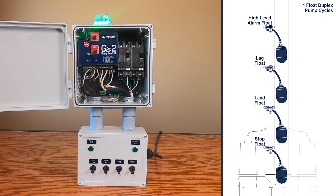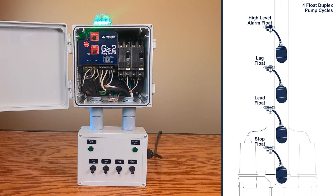This is a demonstration for the Alderaan GO 2 duplex control panel demonstrating float controlled pumping cycles. Attached to the GO 2 control panel is a float simulator box that uses toggle switches to simulate float switch activation. We will use the toggle switches and activate them in a proper sequence to simulate water rising and lowering inside the tank.